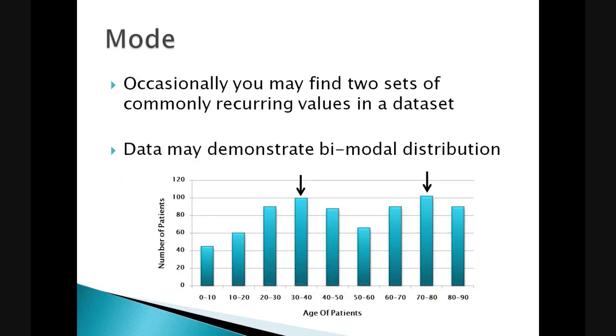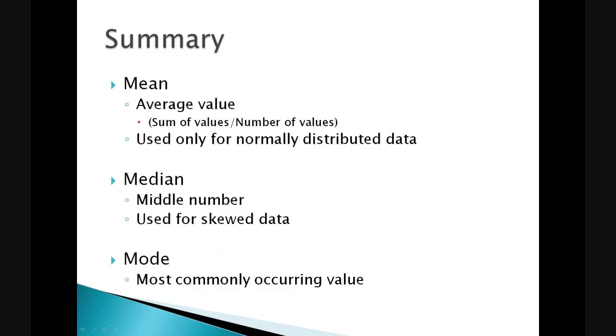In a slightly more unusual situation, we may find that there are two sets of commonly reoccurring values within our dataset. We may therefore determine that our data is bimodally distributed. For example, when we consider the graph below, we can see that there are two clearly defined peaks. One for age 30 to 40, and the second at ages 70 to 80. This may be the case for a condition that presents at two different age groups.